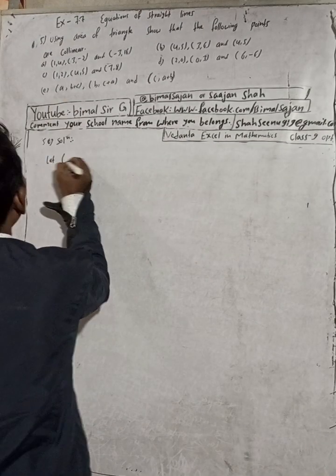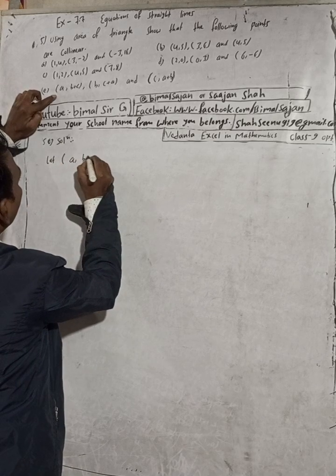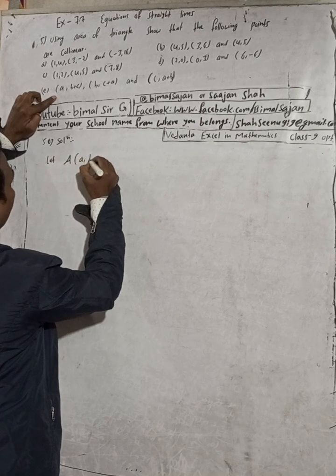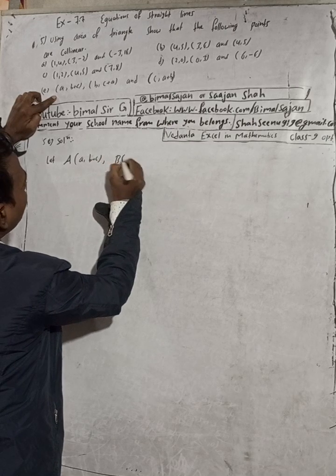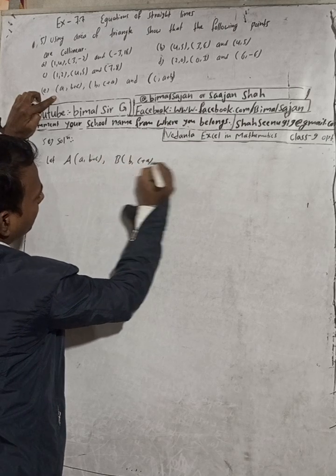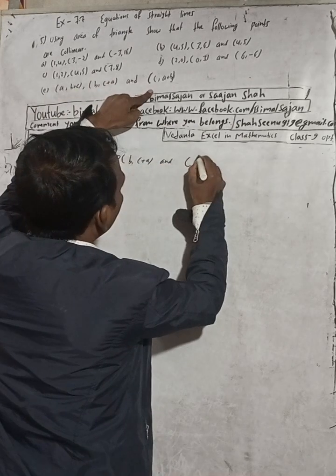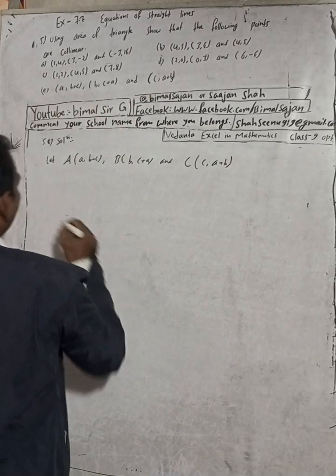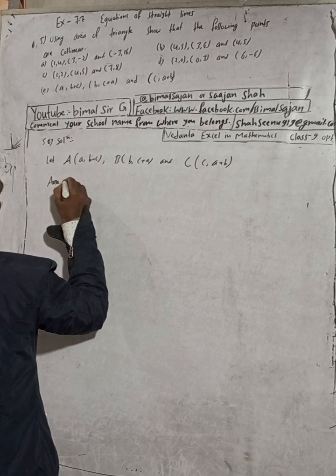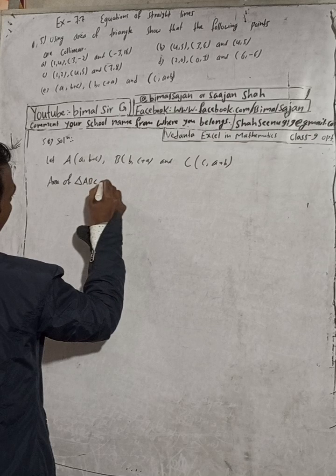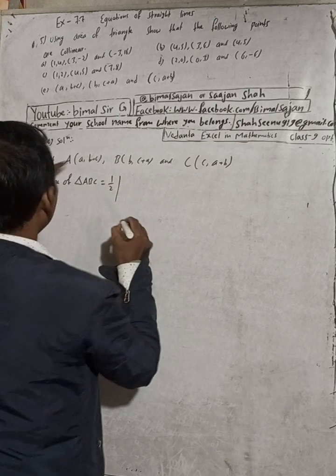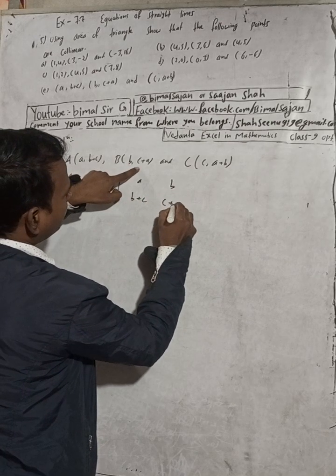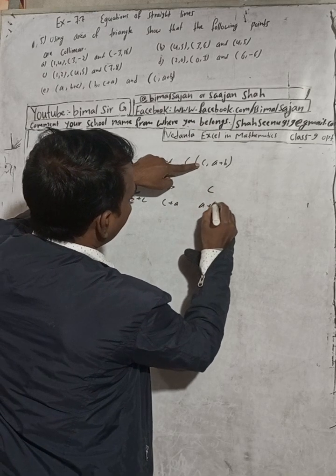For part 5e: let A(a, B+C), B(b, C+A), and C(c, A+B). We find the area of triangle ABC using the determinant formula 1/2, writing the coordinates: a,(B+C); b,(C+A); c,(A+B); and repeating a,(B+C).